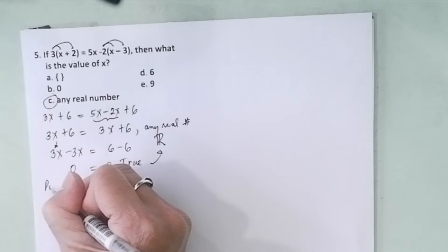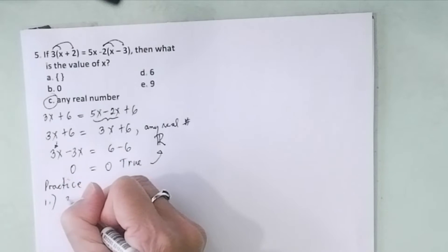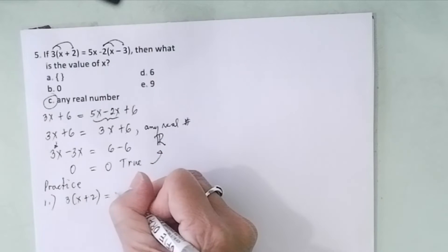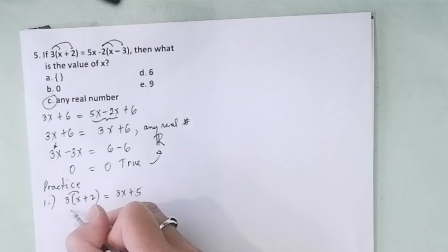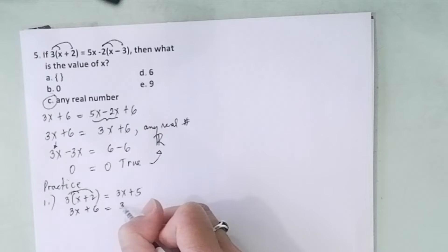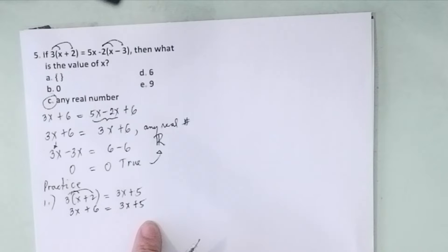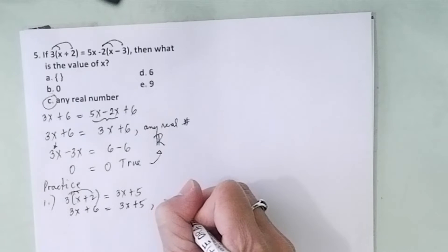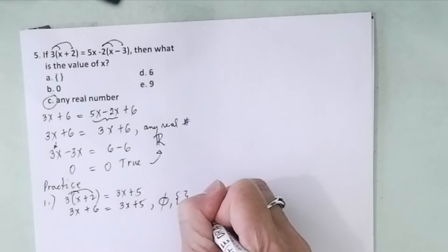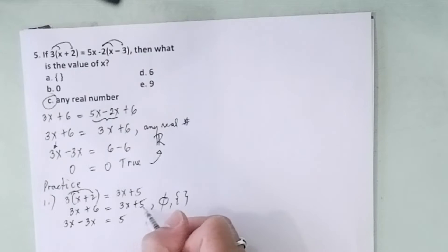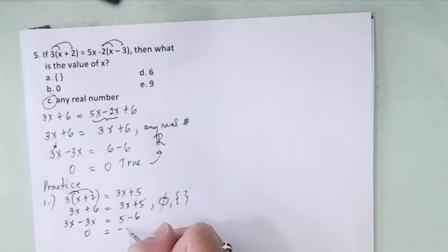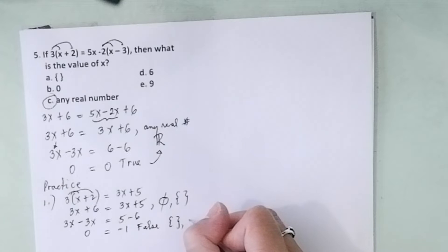Let's have practice. If 3 times the quantity (x plus 2) equals 3x plus 5, what is your answer? Distributing: 3x plus 6 equals 3x plus 5. The left side and the right side are not equal, so you can immediately conclude the answer is the empty set. If you continue: transposing gives 0 equals negative 1, which is a false statement. When you have a false statement, your answer is the empty set — meaning no value for x.